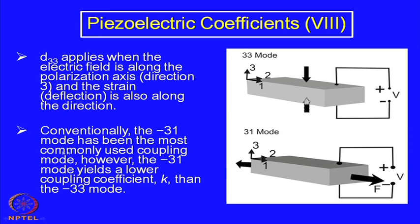Conventionally, the 3-1 mode has been the most commonly used coupling mode. However, the 3-1 mode yields a lower coupling coefficient k than the 3-3 mode. If given the option, the 3-3 mode is much better because the 3-1 mode yields a lower coupling coefficient, meaning the energy conversion is lower in 3-1 compared to 3-3 because in 3-3 the stress and voltage directions are parallel.